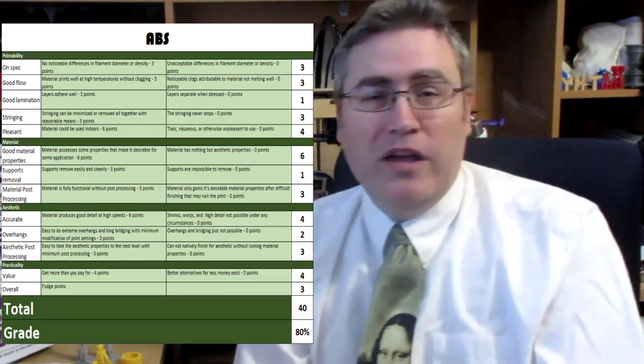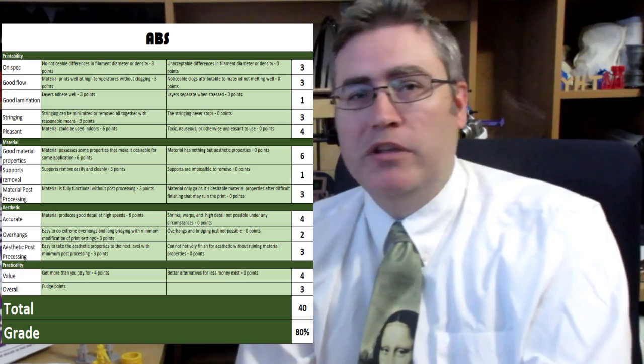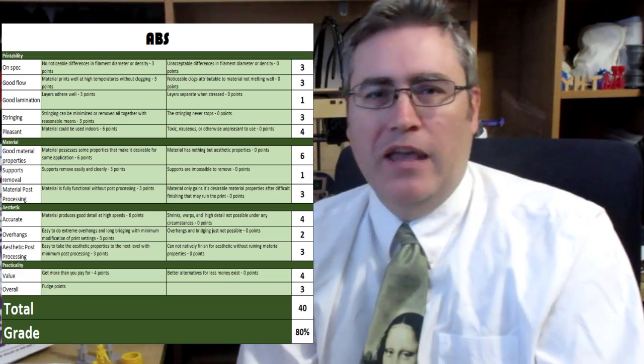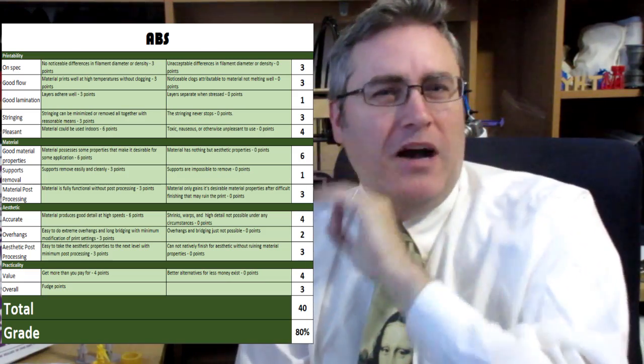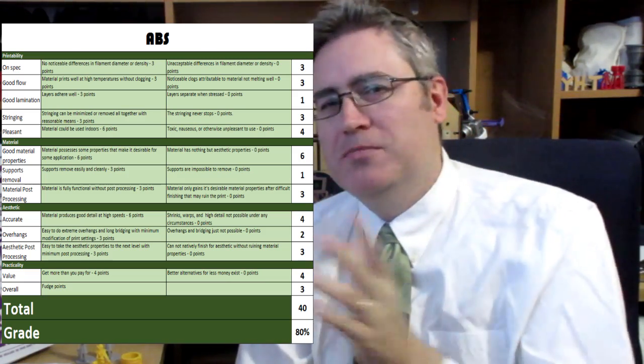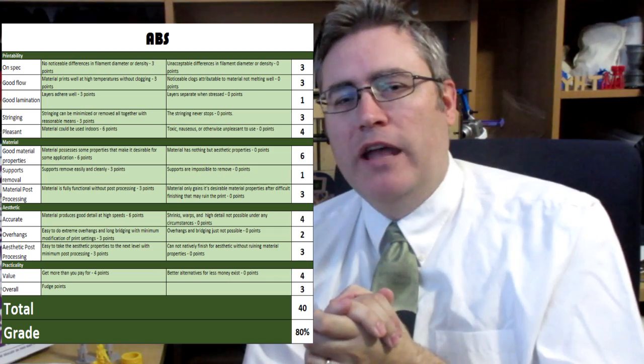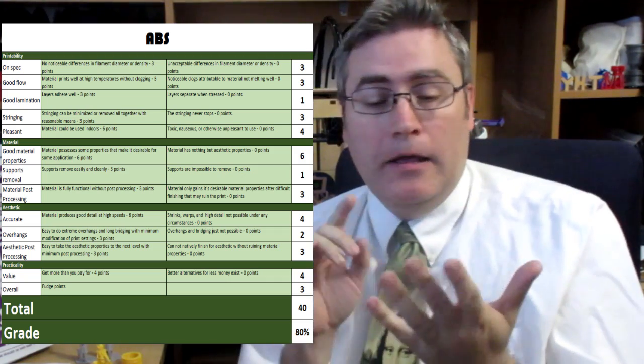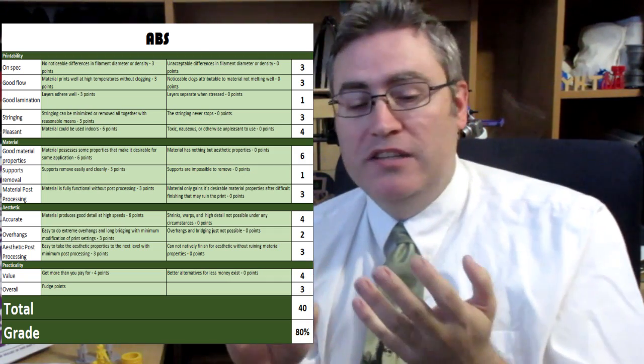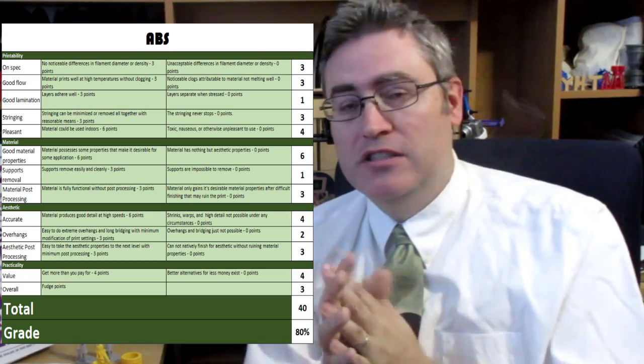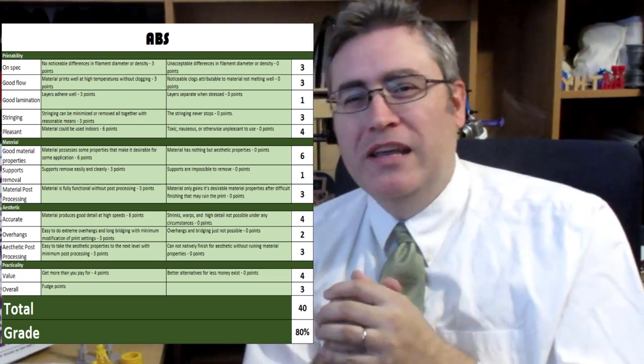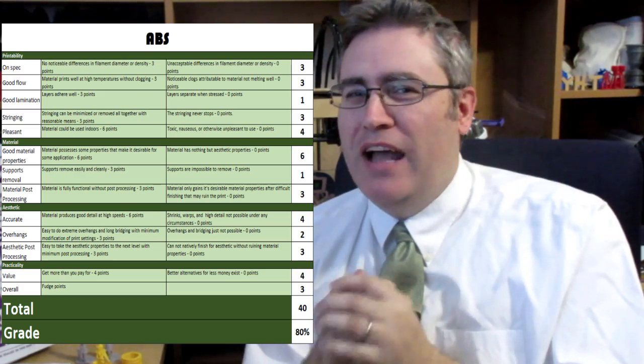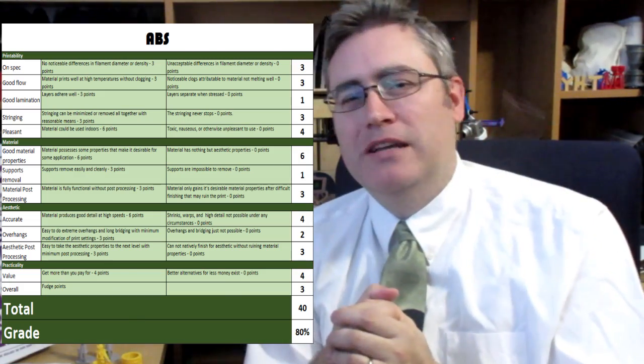So just by way of comparison, here's the score that I would give an average roll of ABS and it gets about an 80%, which I had to pump it up to an 80% with those fudge points but that's okay. 80% for ABS because yeah it has great material properties, it has great chemical resistance and things like that, it also finishes wonderfully, but its ability to do high detail work kind of suffers a little bit.